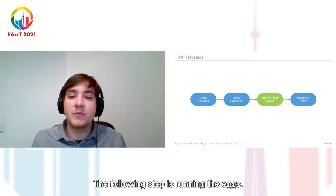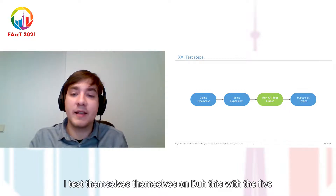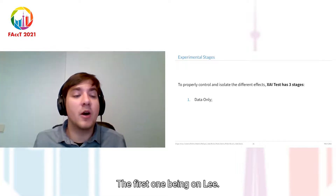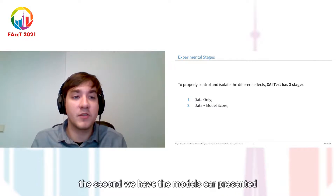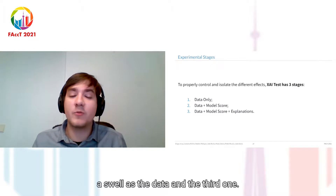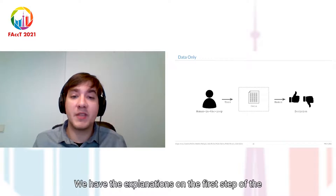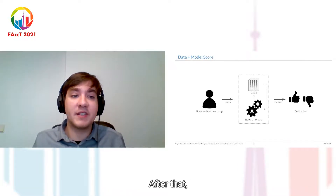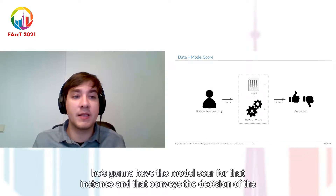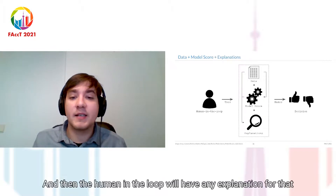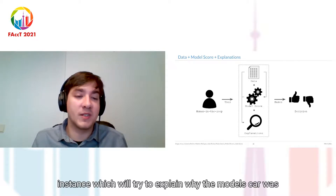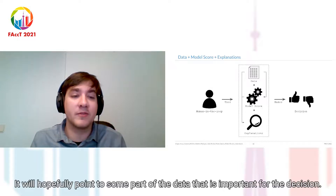The following step is running the XI tests themselves, and we divide these into three different stages to properly isolate the different effects of the components of the system. The first stage involves only the data. The second adds the model score along with the data. And the third adds the explanations. In the first stage, the human in the loop only has information relative to the instance they are reviewing. Then they receive the model score, conveying the model's decision and uncertainty. Finally, they receive the explanation, which tries to explain why the model score was as it was and hopefully points to the important parts of the data.